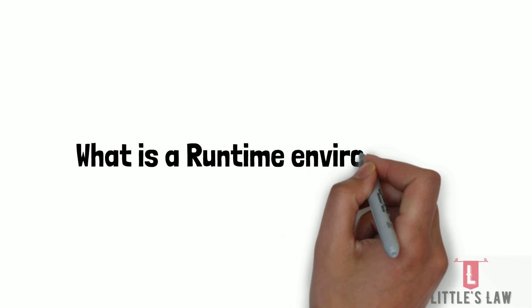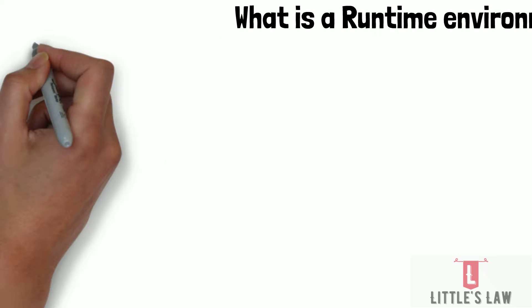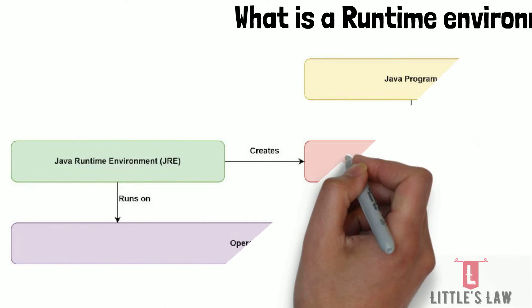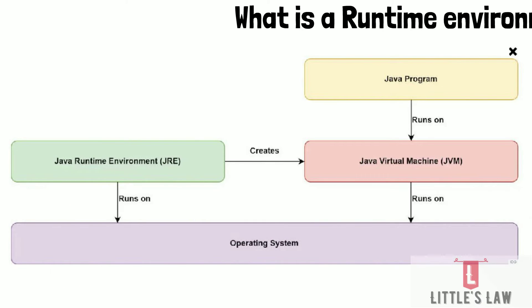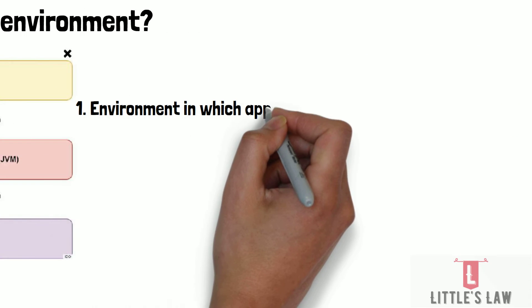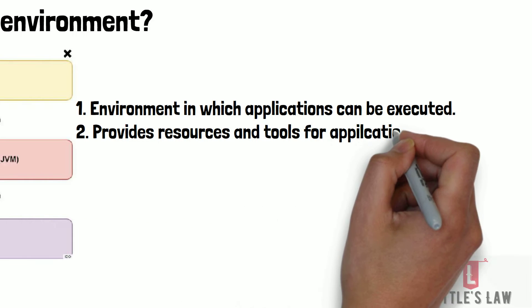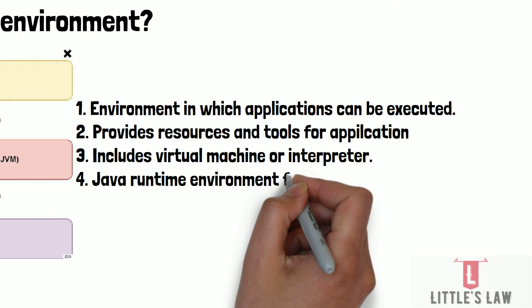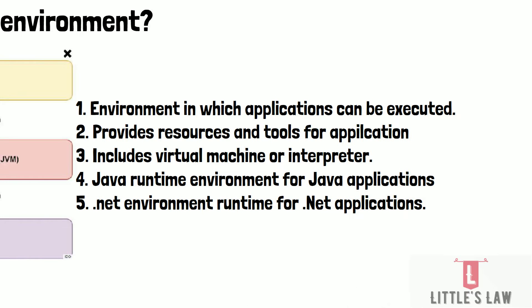Now let's look at what a runtime environment is. A runtime environment is a software environment in which applications can be executed. It provides the necessary resources and tools for any application to run, including libraries, runtime libraries, and other dependencies. A runtime environment typically includes a virtual machine or interpreter that executes the application's code and manages its resources, as well as tools and services such as memory management, networking, and input/output.